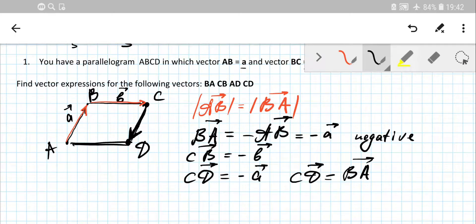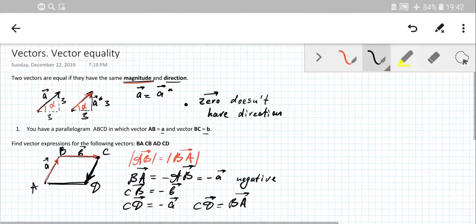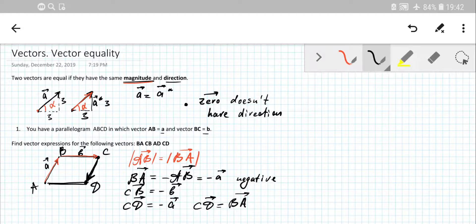So hence, we can get the expression for each one. That's pretty simple. And that's what vector equality means. Hope you enjoy guys and see you later in this topic.